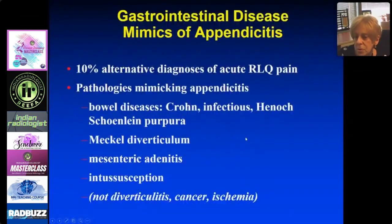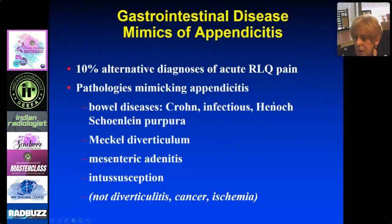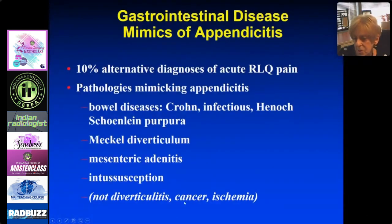Gastrointestinal disease accounts for 10% of alternative diagnoses when appendicitis is suspected. The diagnoses include bowel disease, Crohn's disease, infection, Henoch-Schönlein purpura, Meckel's diverticulum, mesenteric adenitis, and intussusception. We do not see the diseases that we see in adults.